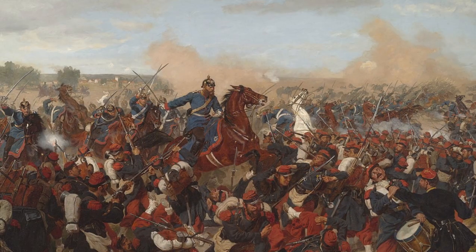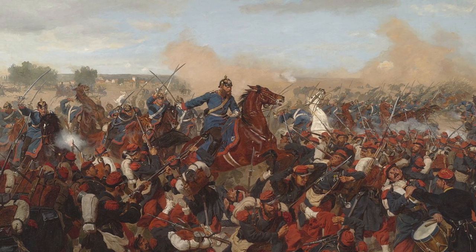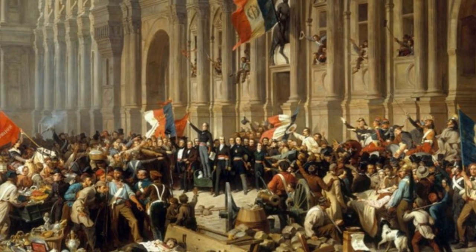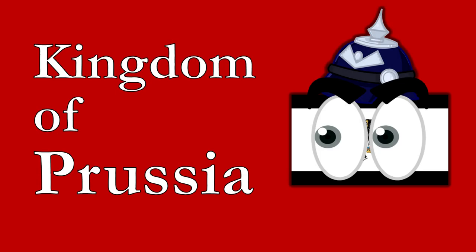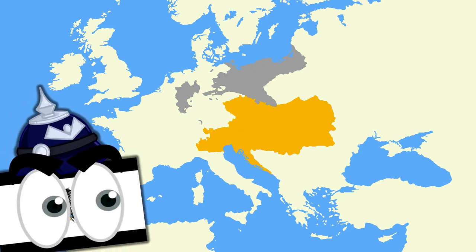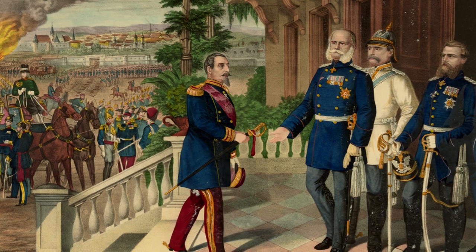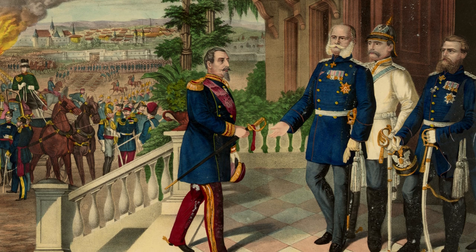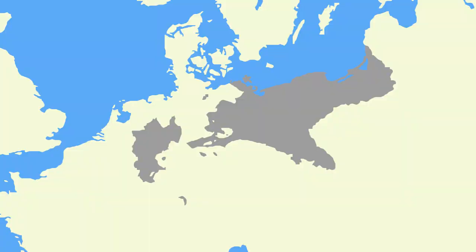The Franco-Prussian War began in 1870, but the circumstances that resulted in it breaking out had been coming together since the Europe-wide revolutions of 1848. That year saw the Kingdom of Prussia, one of the two most powerful German states, become a constitutional monarchy, and a lot of government power was moved to Prussia's minister-president and away from its king. By the time of the Franco-Prussian War, that office would be held by one Otto von Bismarck, a man who was determined to unite Germany under Prussian — and therefore largely his — rule.